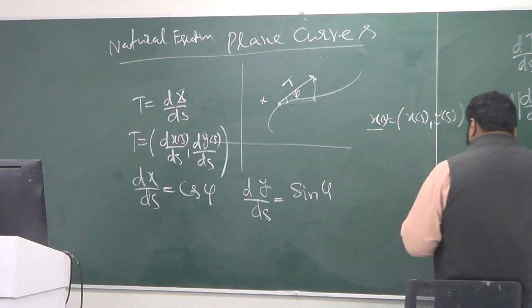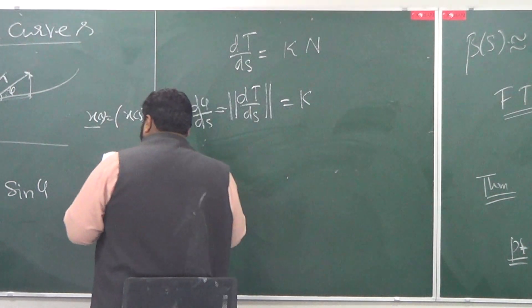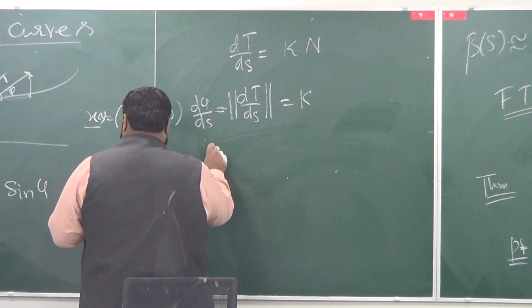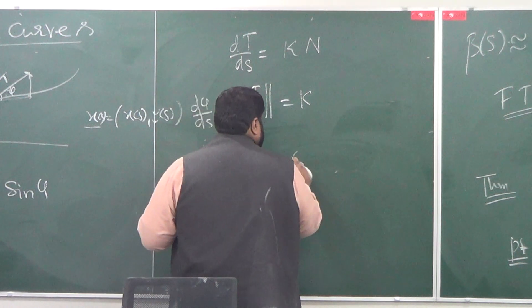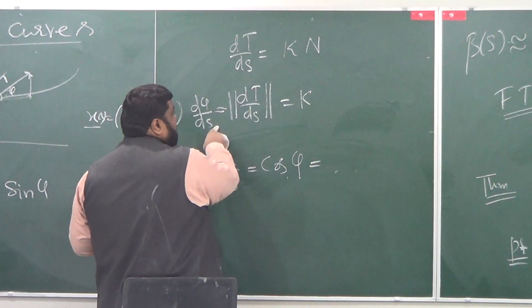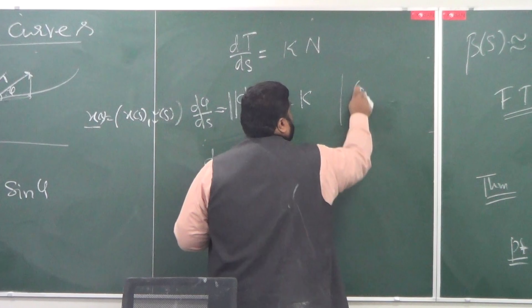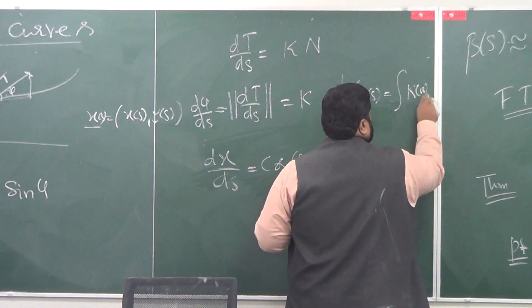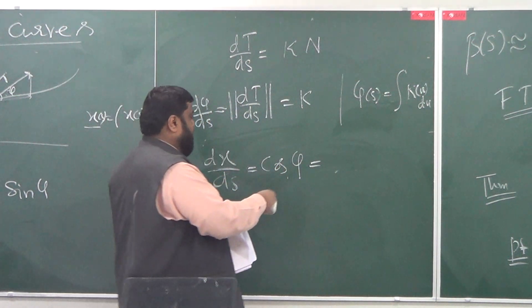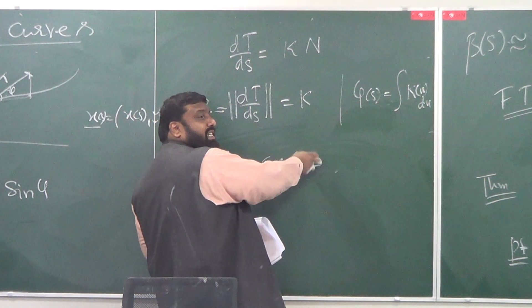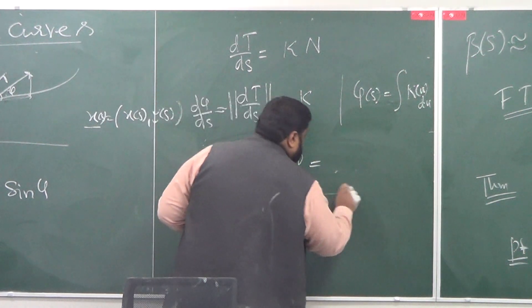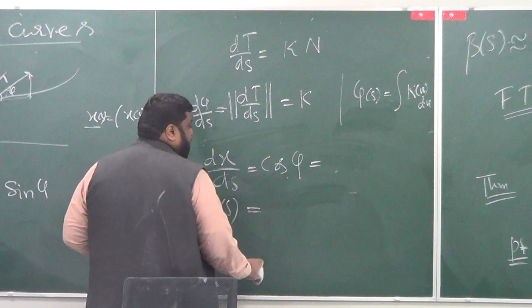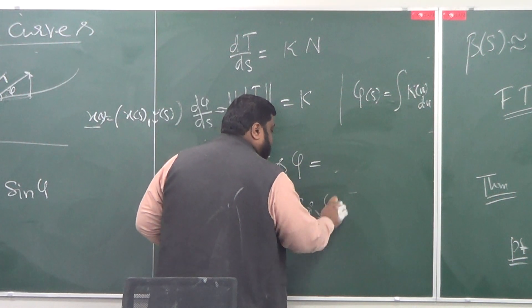So, dx/ds = cos φ. And I can compute φ(s) by integrating the curvature. Once you have this, x(s) is going to be the integral of cos φ ds.